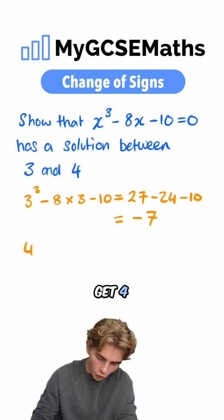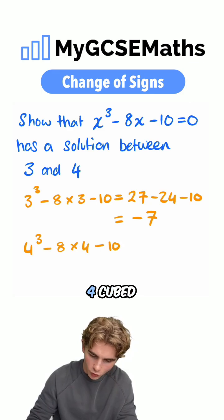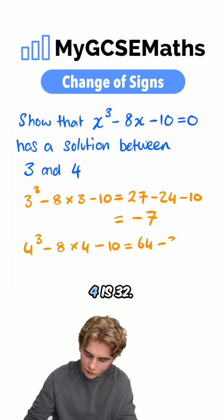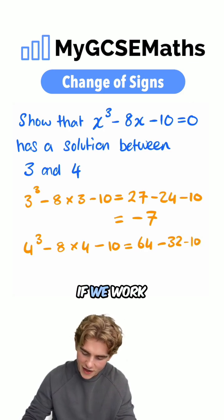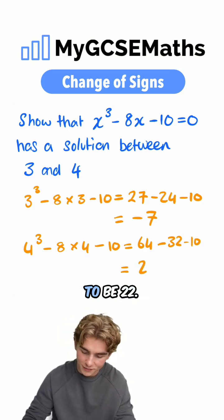What about subbing in 4? We're going to get 4³ - 8 × 4 - 10. 4³ is 64. 8 × 4 is 32. So we have 64 - 32 - 10. If we work this out, 64 - 32 is 32. Take 10 is 22.